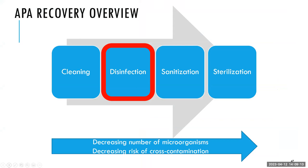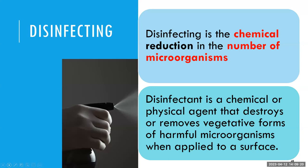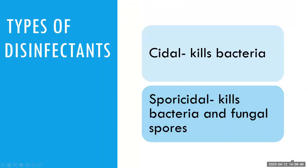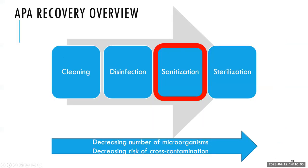After cleaning, we disinfect. Disinfecting uses a chemical that reduces the number of microorganisms by disrupting their cell structure — making them non-living when applied to a surface. Two common disinfectants pharmaceutical manufacturers use: bactericidals, which kill bacteria, and sporicidals, which kill both bacteria and fungal spores.